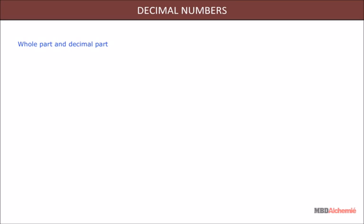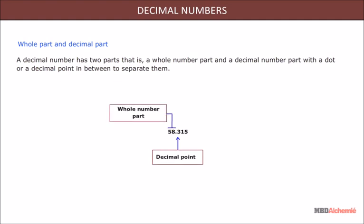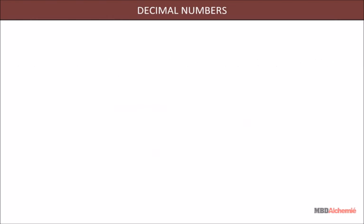Whole part and decimal part. A decimal number has two parts. That is, a whole number part and a decimal number part with a dot or a decimal point in between to separate them. For example, in the decimal number 58.315, 58 is the whole number part, 315 is the decimal number part and the point between them is the decimal point.